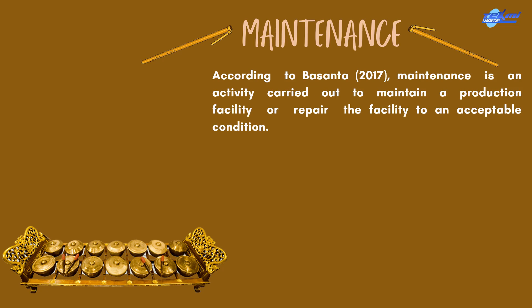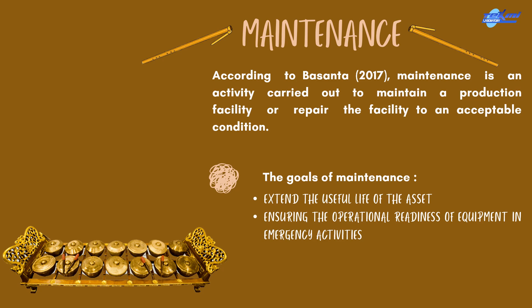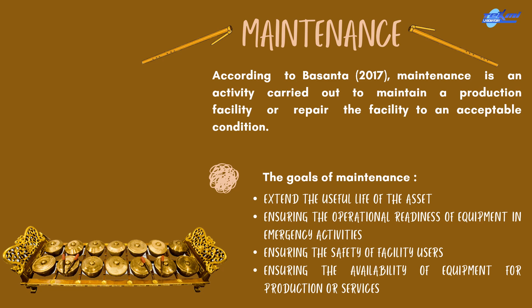Maintenance. According to Basanta, maintenance is an activity carried out to maintain a production facility or repair the facility to an acceptable condition. The goals of maintenance are: 1. To extend the useful life of the asset. 2. To ensure the operational readiness of equipment in emergency activities. 3. To ensure the safety of facility users. 4. To ensure the availability of equipment for production or services.